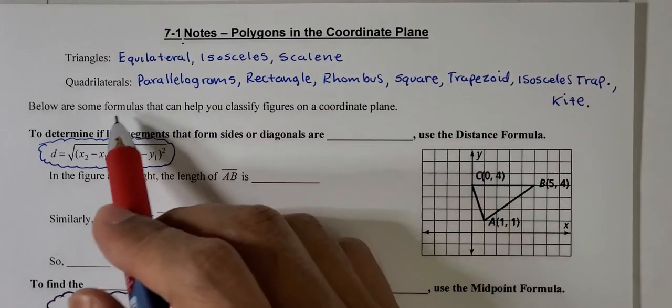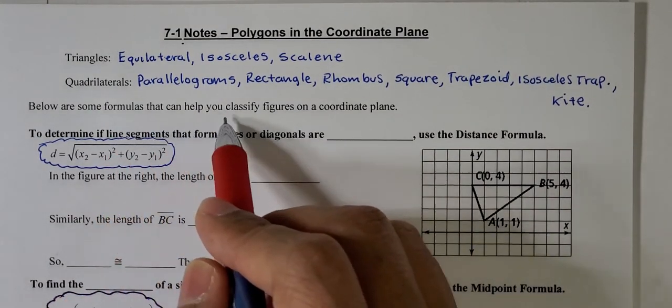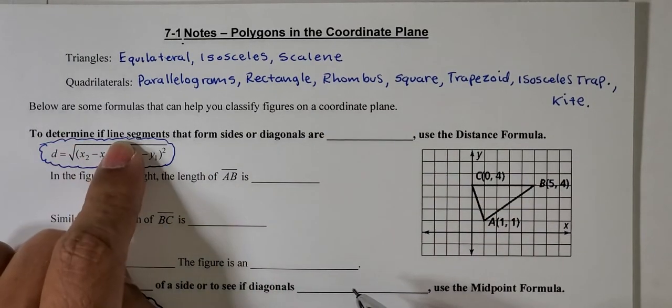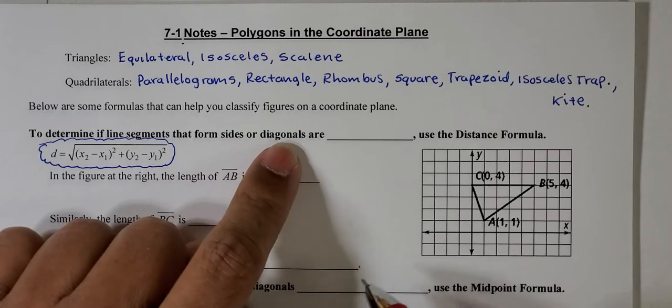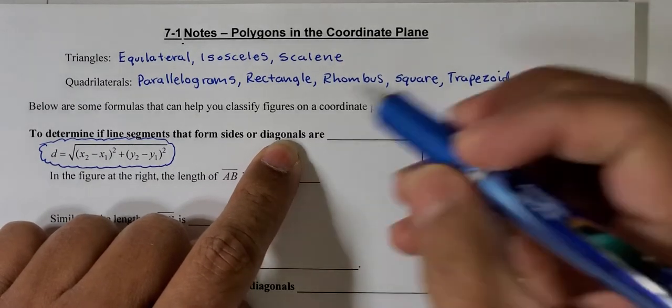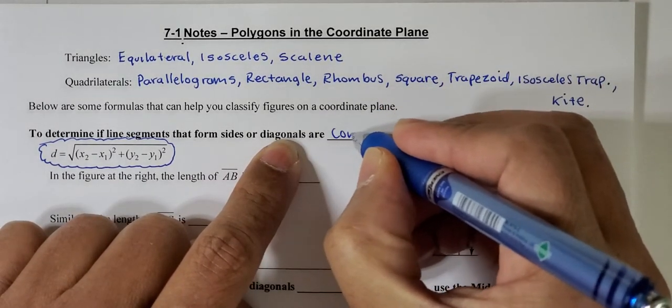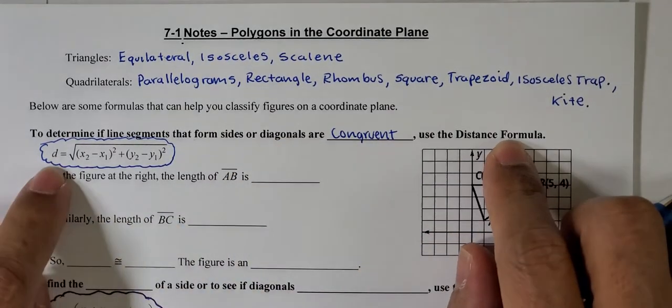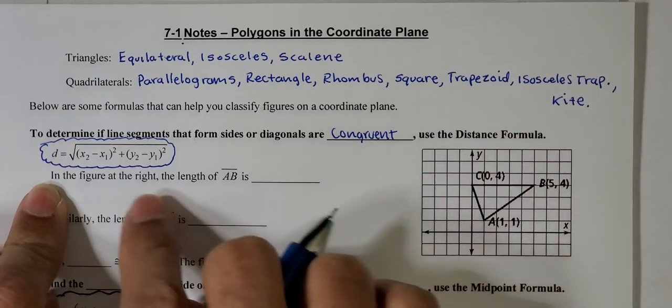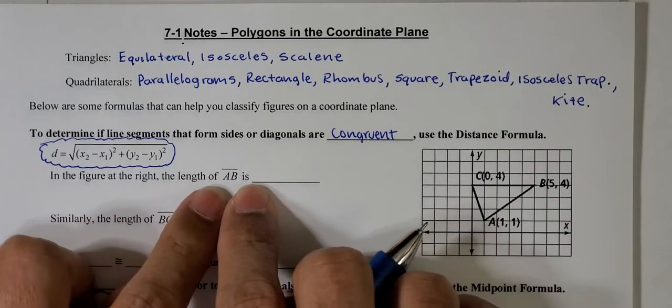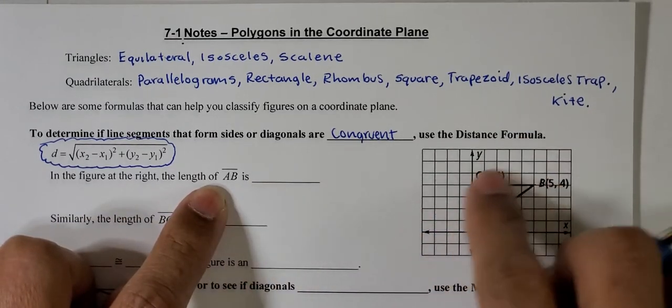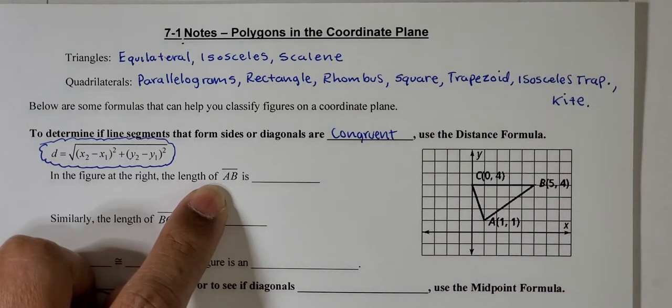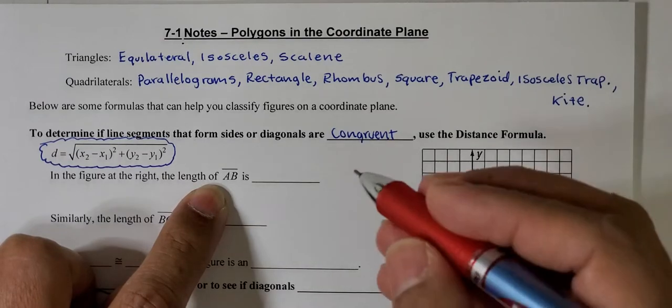Below are some formulas that can help you classify figures on a coordinate plane. To determine if line segments that form sides or diagonals are congruent, we use the distance formula. So in the figure at the right, the length of AB is, as you can see, this is in a diagonal form, so we are going to use the distance formula here.